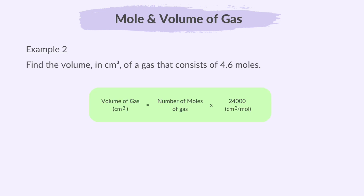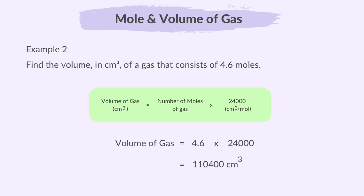In the next example, we have been asked to find the volume in cubic centimetres. So we use the formula: volume of gas = number of moles of gas × 24,000 cm³. Therefore, 4.6 × 24,000 gives us 110,400 cm³.